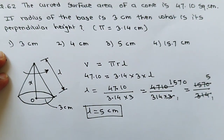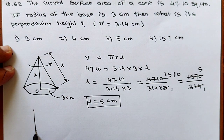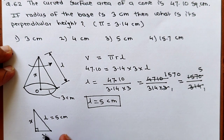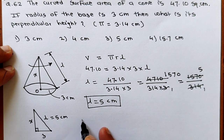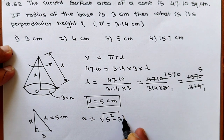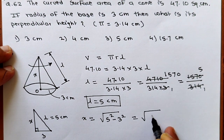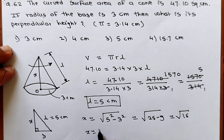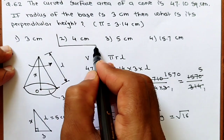Now calculate perpendicular height X using the Pythagoras theorem. We have a right triangle with hypotenuse L equals 5 centimeters and base radius equals 3 centimeters. This is a Pythagoras triplet. X equals square root of 5 squared minus 3 squared, which is square root of 25 minus 9, equals square root of 16. So X equals 4 centimeters. This is the 3-4-5 Pythagoras triplet, so 4 centimeters is our correct answer.